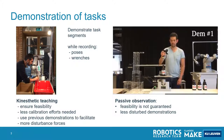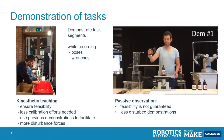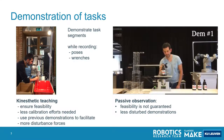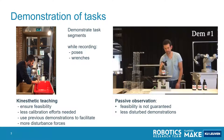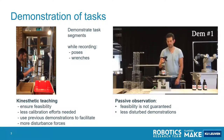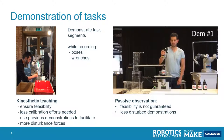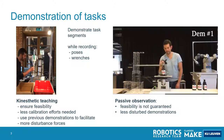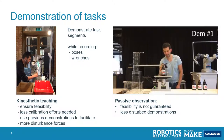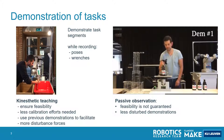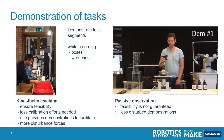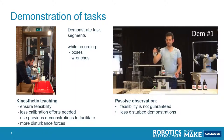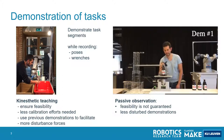First, we have kinesthetic teaching, where you take the robot by hand under force control and drive the robot according to the task. This approach ensures visibility and requires much less calibration effort, because the demonstration setup is exactly the same as the execution setup. An additional advantage is that on top of the force control, we can add other behaviors — for example, to achieve a kind of impedance control — that already seats the demonstrations with the previous demonstrations.